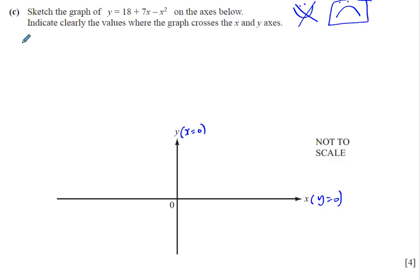So it will cross the y axis when x is 0. When x is 0, we have y equals 18 plus 7 times 0 minus 0 squared, which gives us 18. That means it crosses the y axis at the point 0, 18. That's where it will cross the y axis. I won't put it so high up. It's just a sketch, it doesn't have to be accurate.